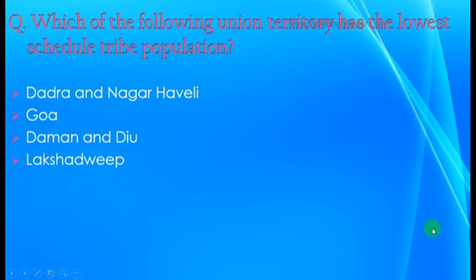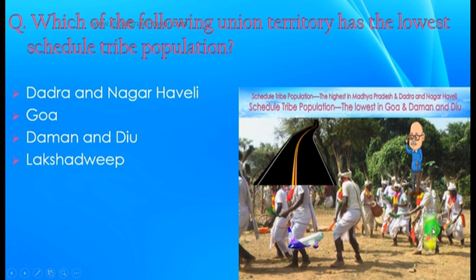Recall the base image: scheduled tribes were dancing. For the lowest among UTs — on the right side — one of the persons was taking Mountain Dew. So the answer should be Daman and Diu.